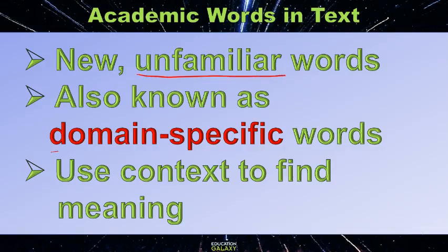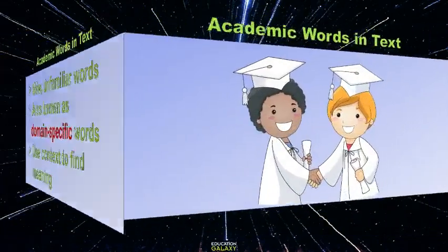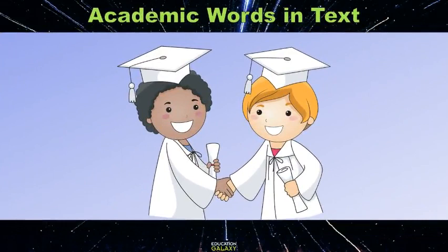as domain-specific words. Domain means area, so when the author is talking about a topic, he or she may use words specific to that topic, and they mean something different in that context. You use context clues to find the meaning of academic words in text. He is almost there — he's almost done, shaking hands with another academic words student.